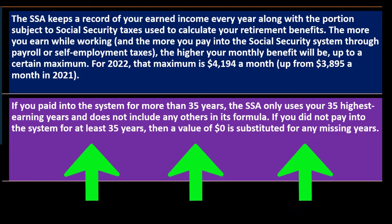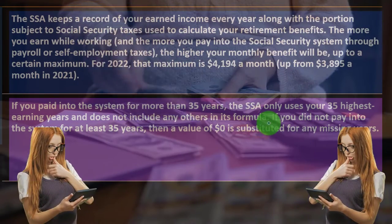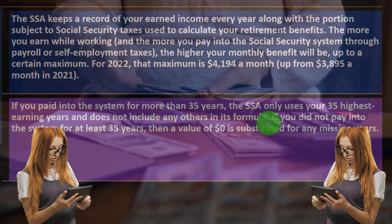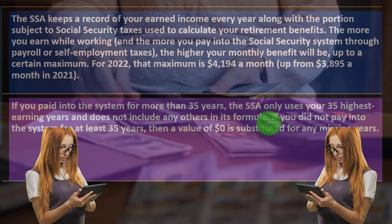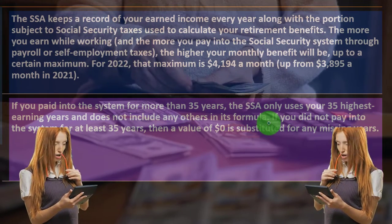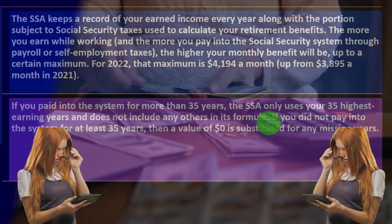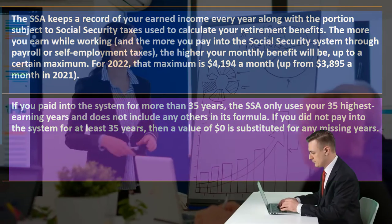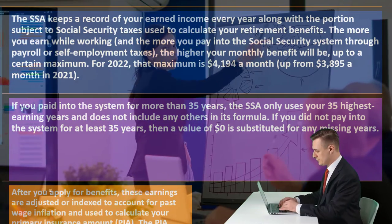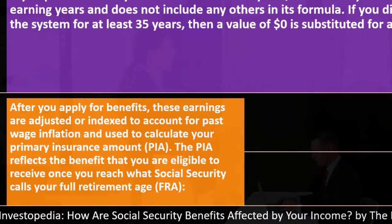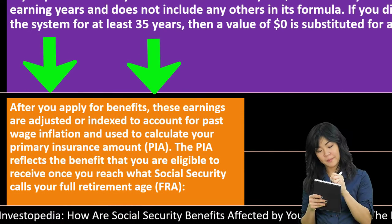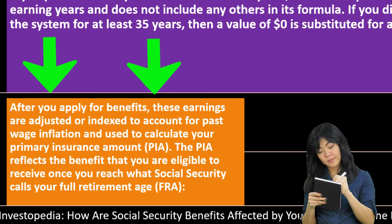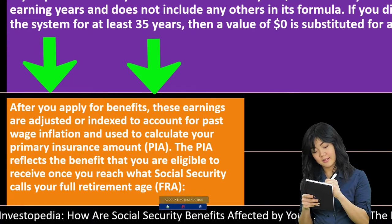If you paid into the system for more than 35 years, the SSA only uses your 35 highest earning years in its formula. If you did not pay into the system for at least 35 years, a value of zero is substituted for any missing years, which drags down the average. After you apply for benefits, these earnings are adjusted or indexed to account for past wage inflation and used to calculate your Primary Insurance Amount (PIA).